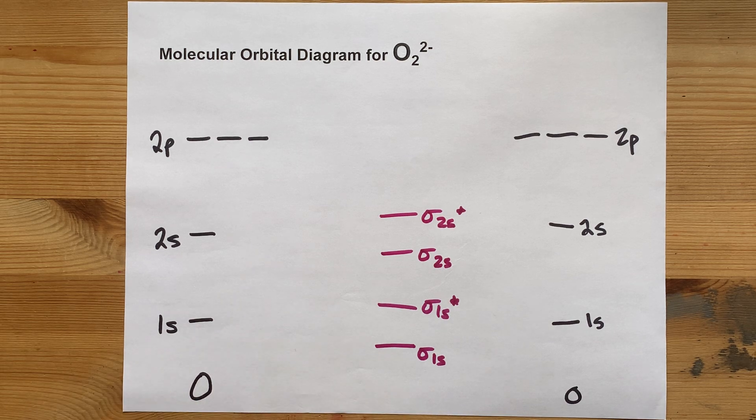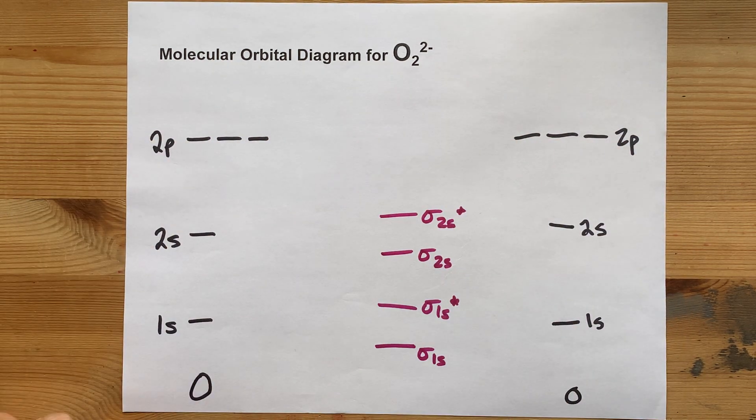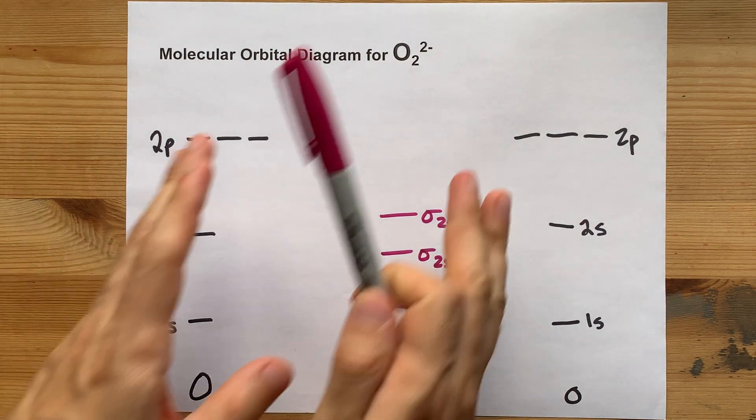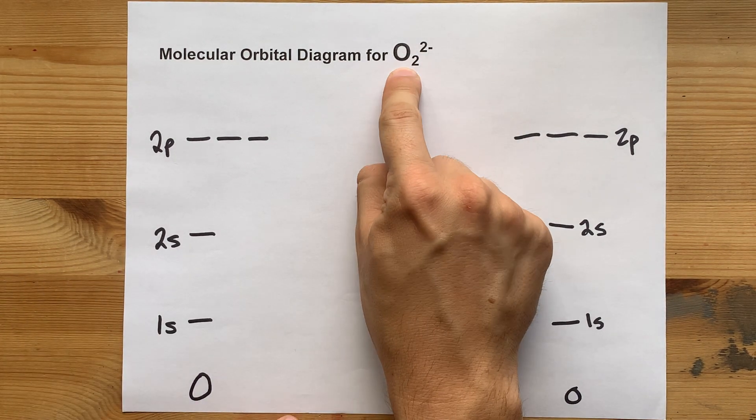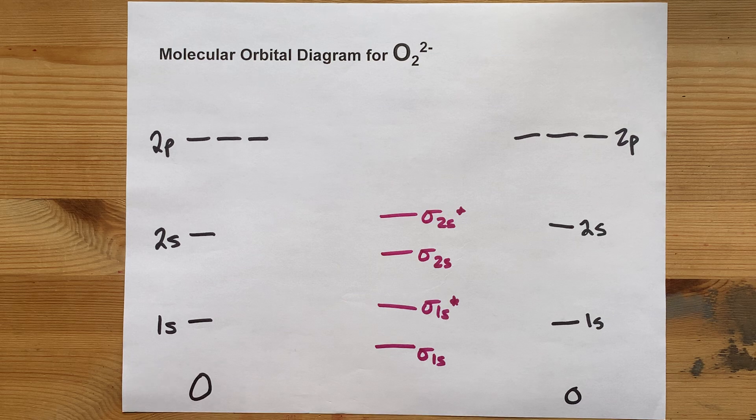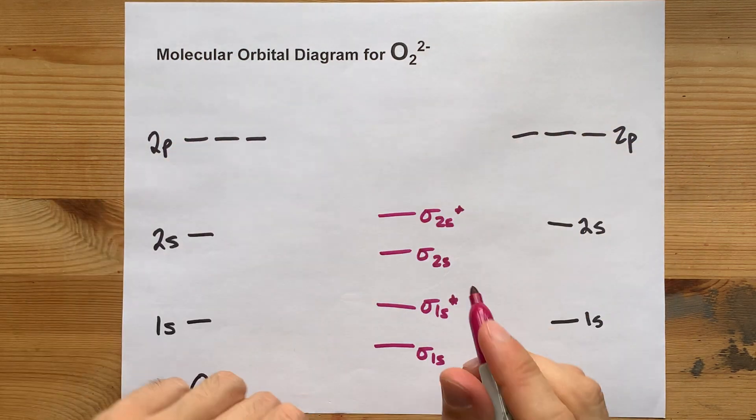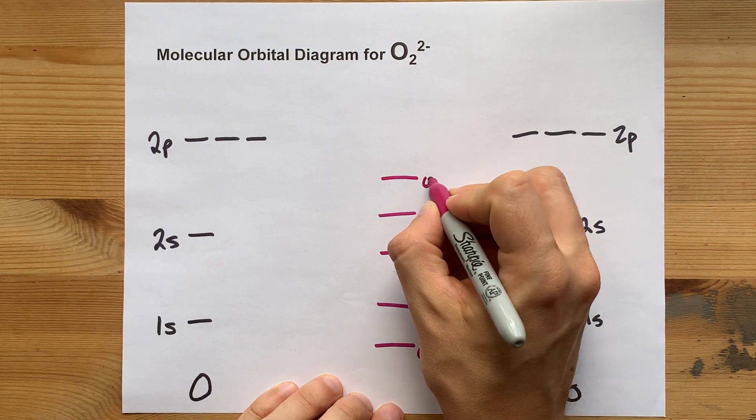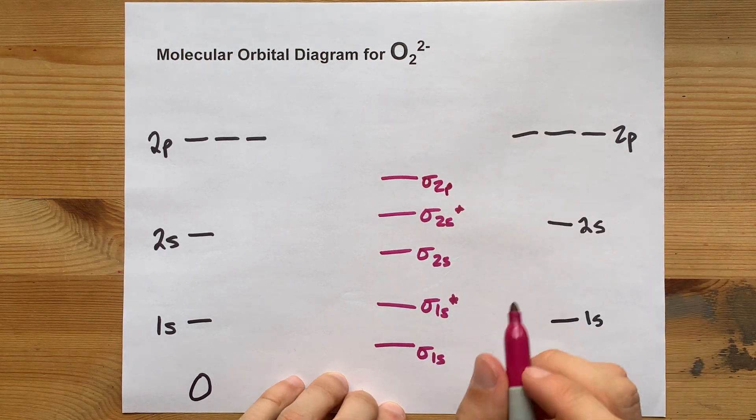It's the overlap of the 2p orbitals that I find kids mess up most often, no offense. For oxygen, fluorine, and neon, the lowest energy molecular orbital formed here is a sigma 2p bonding orbital.